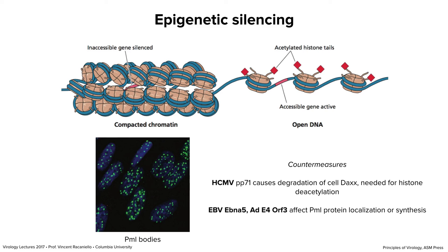When viruses infect cells, one of the responses is to compact the viral DNA. As viral DNAs enter the nucleus, they're chromatinized — they associate with chromatin, wrapped around nucleosomes, and silenced. They get directed to what are called PML bodies. This is where we think chromatin goes when it's silenced. A number of viruses antagonize this process; they try to reverse the formation of PML bodies and reverse the compaction of their chromatin.